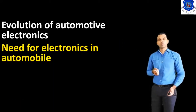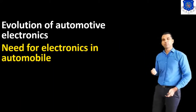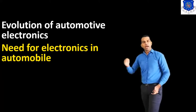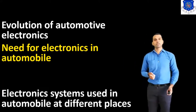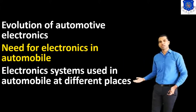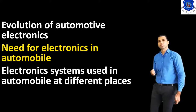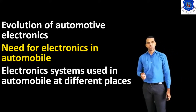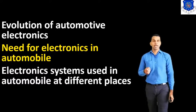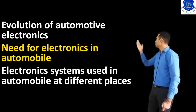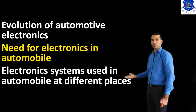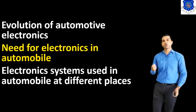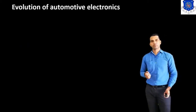Then, we will discuss about the Need for Electronics in Automobile. And last, we will discuss about the Electronic Systems used in Automobile at Different Places. So, in this lecture, we will discuss about these three topics. We start with the first one: Evolution of Automotive Electronics.